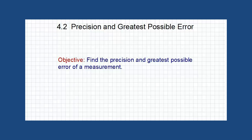The precision of a measurement is the smallest unit with which the measurement is made. We can find it by determining the position of the last significant digit in the measurement, then changing it to 1 and making all other digits zeros. Half of this precision is what we call the greatest possible error.